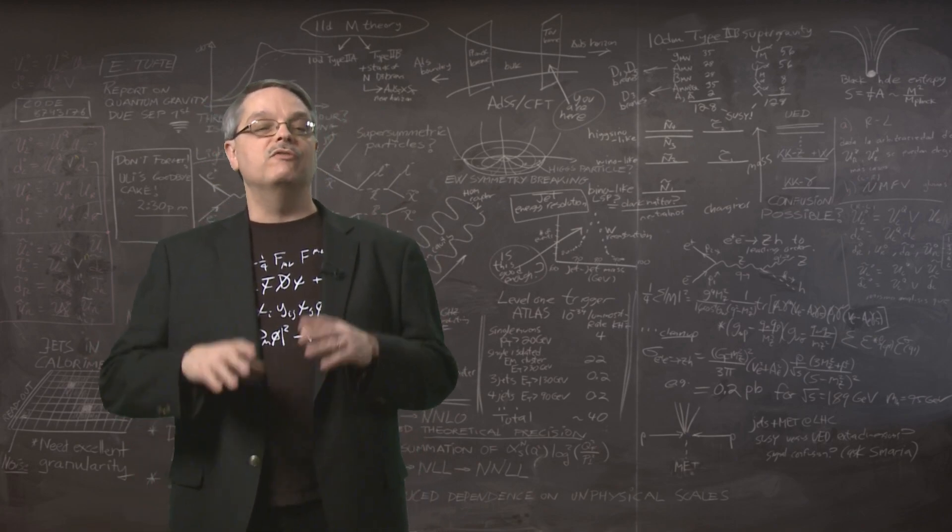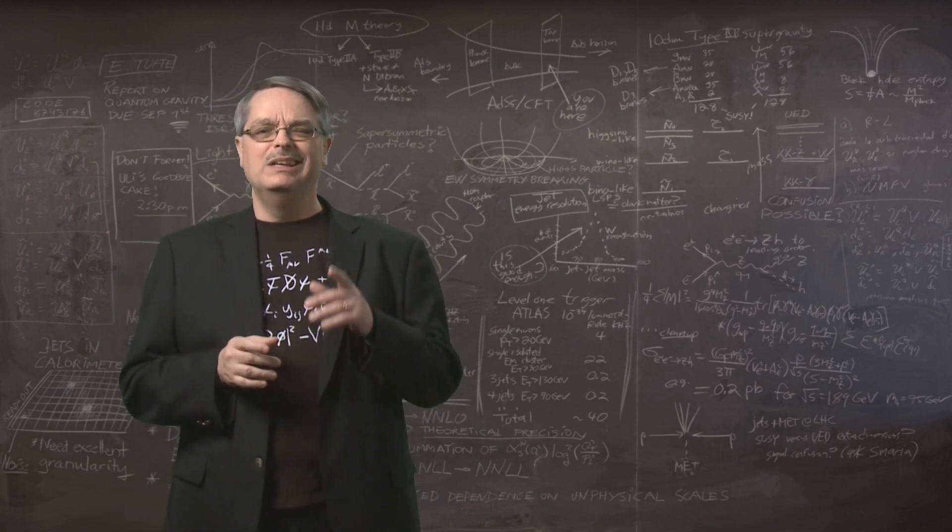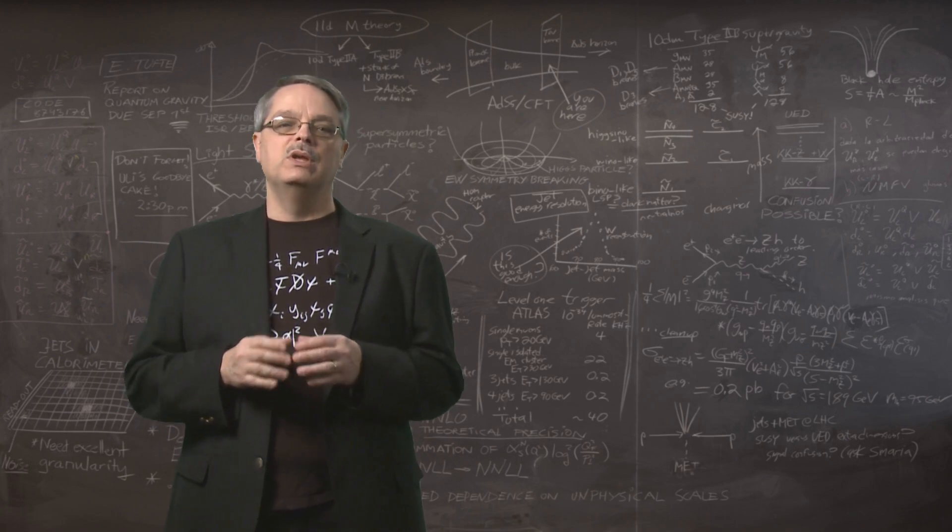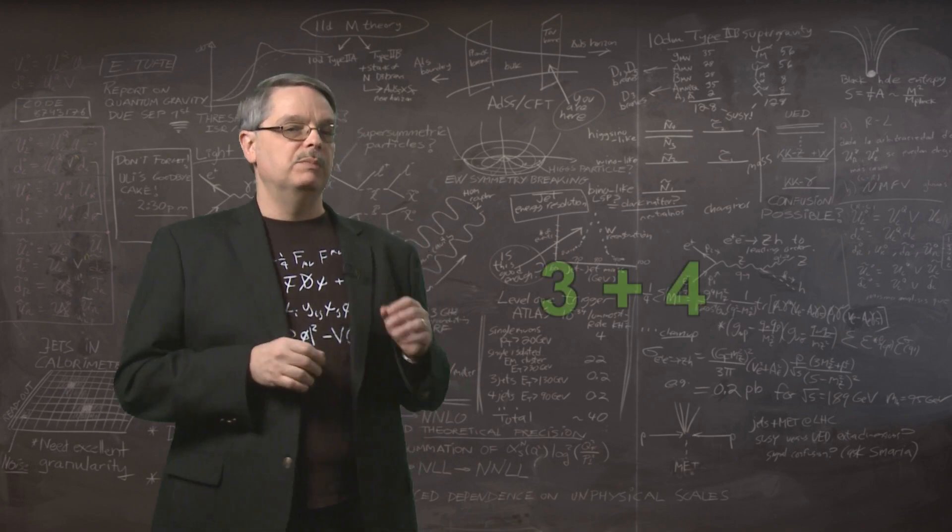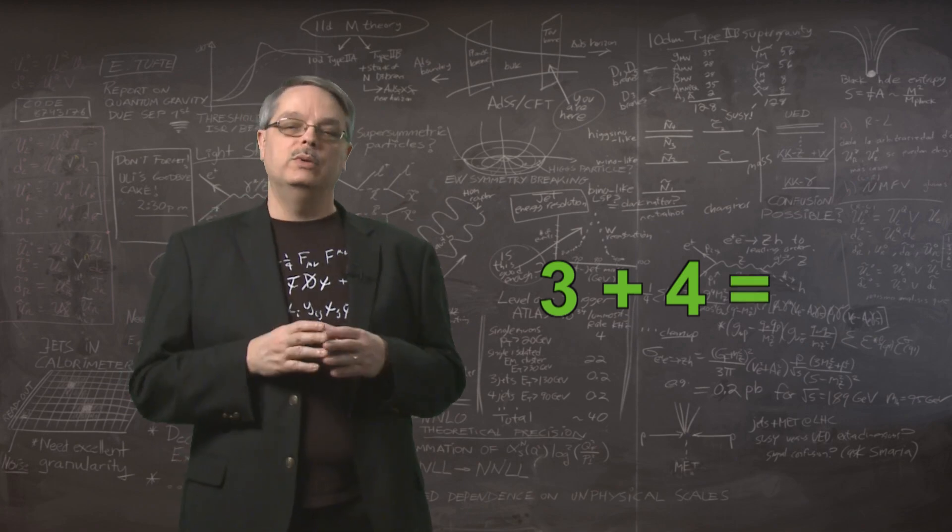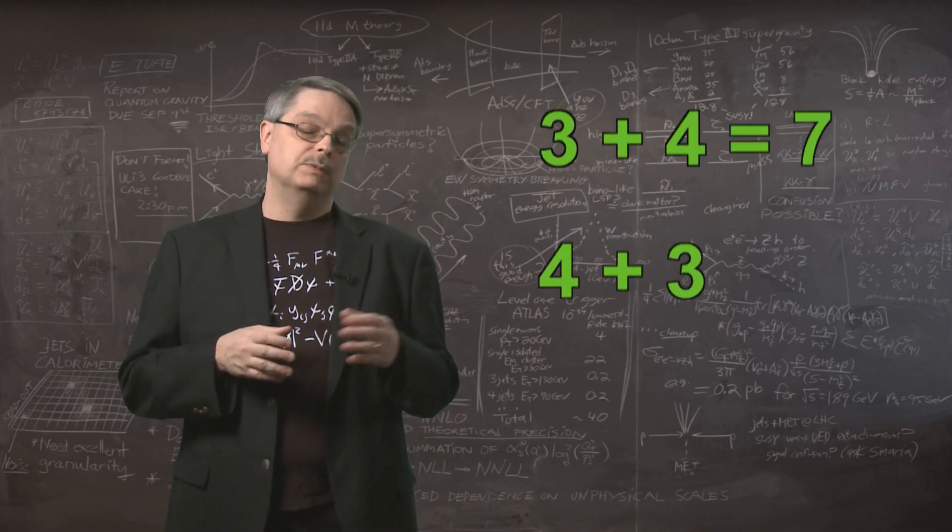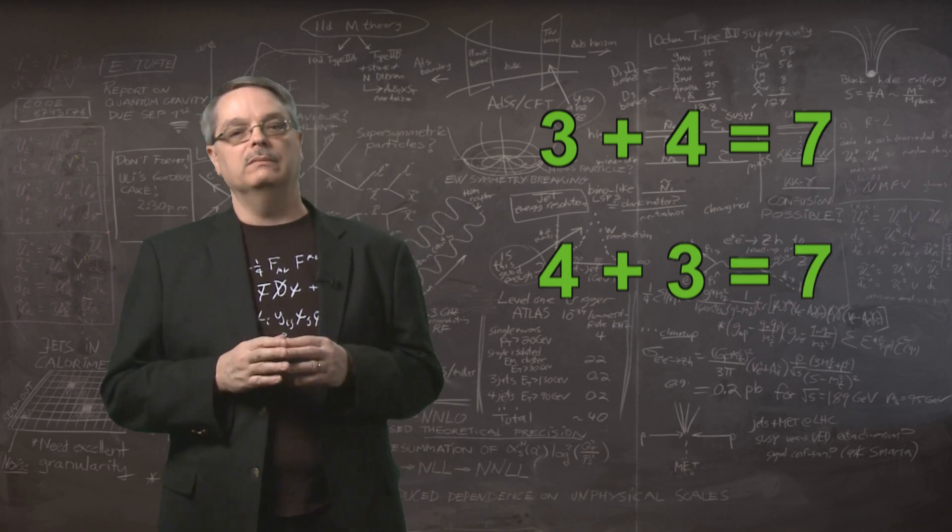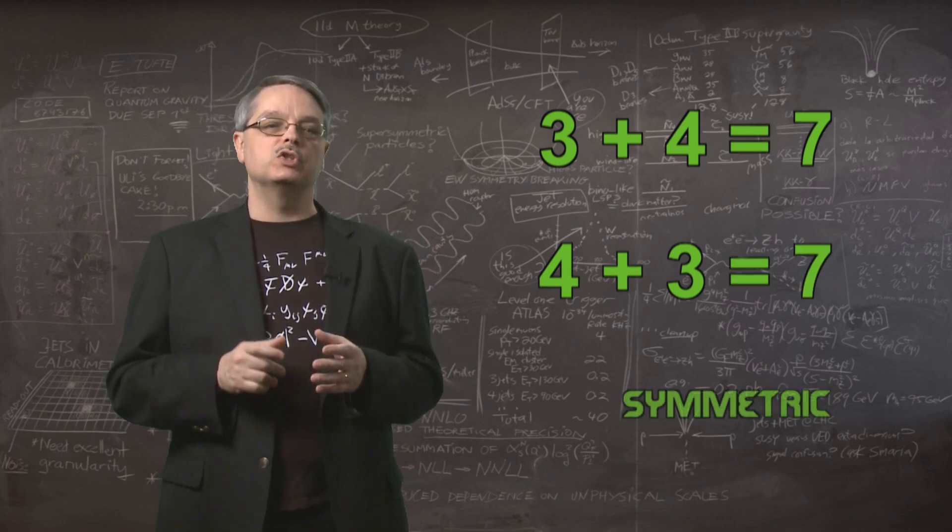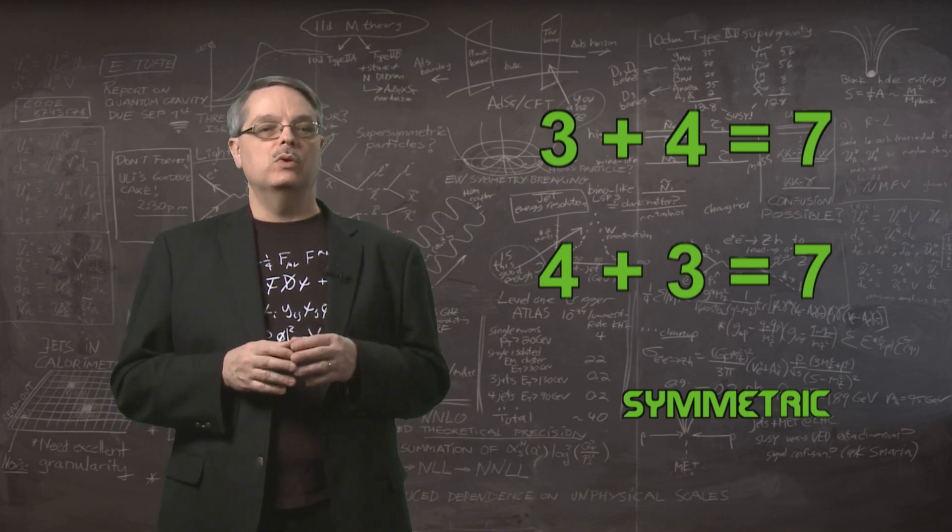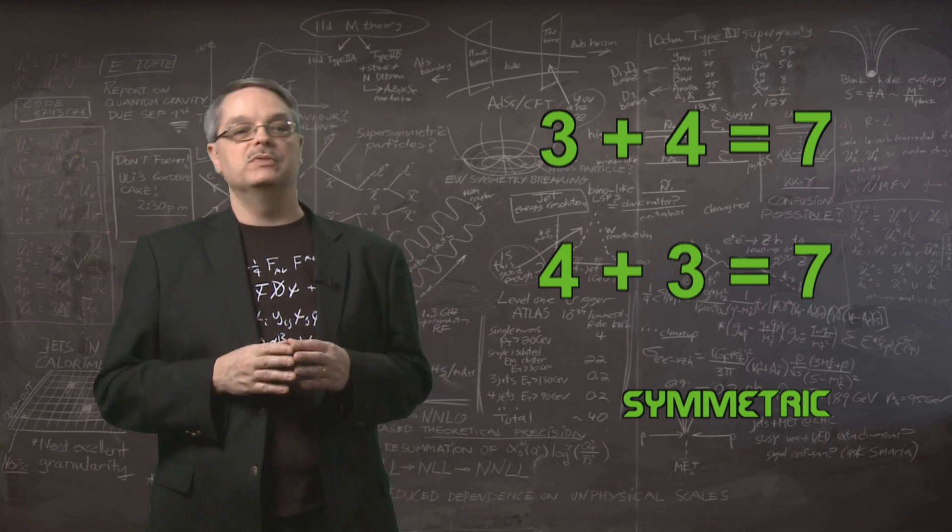In physics, we think in terms of mathematical equations. Let's take a look at a simple example. We see here the equation of 3 plus 4, which we all know equals 7. If we swap the order of the 3 and the 4 and have 4 plus 3, it still equals 7. We can say that addition is symmetric under swapping the order. Swap the order and get the same answer. That's a form of symmetry.